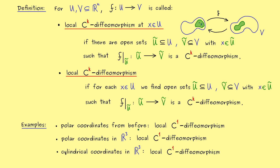Therefore, the next step is to find a nice criterion to check for a local diffeomorphism. As you might already know, this is given by the determinant of the Jacobian matrix, as we have done it before. What we get is an inverse function theorem, which we will discuss in the next video. I really hope we meet there again — have a nice day. Bye bye.